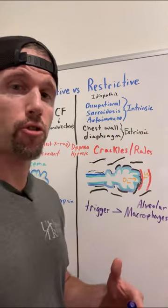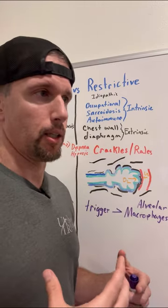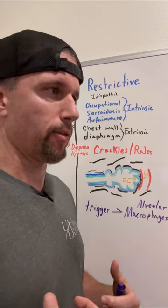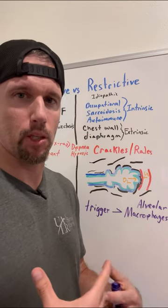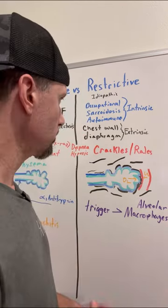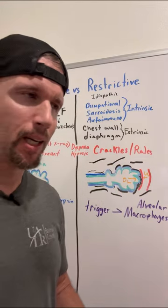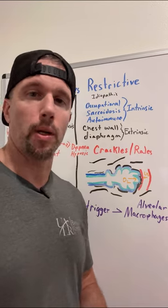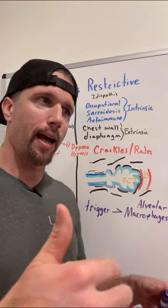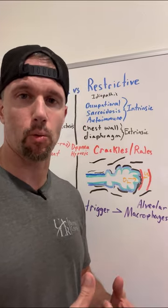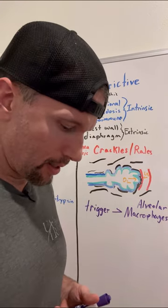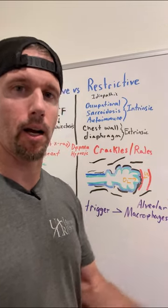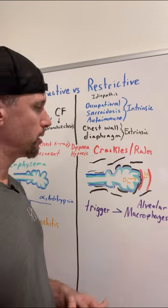Extrinsic causes include anything structural, like the chest wall. If you have ankylosing spondylitis, the ribs won't move out and you don't get the good Boyle's Law effect. Or if you have kyphosis or scoliosis where the ribs don't expand like they should. Then something going on with the diaphragm — this could be myasthenia gravis, Guillain-Barré syndrome, amyotrophic lateral sclerosis or Lou Gehrig's disease — where the innervation or the muscle itself gets weak and doesn't work. The diaphragm is really important because when it contracts, it moves downward and increases the volume of the thoracic cavity to draw oxygen into the lungs. So that's restrictive pulmonary disease.